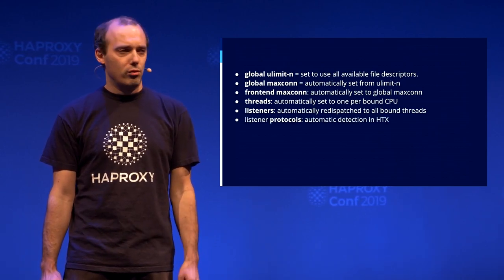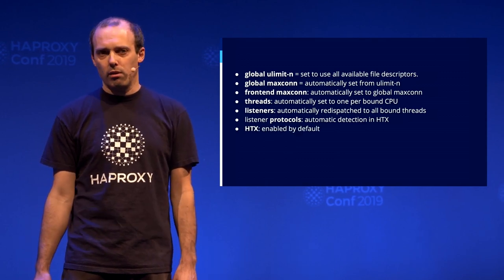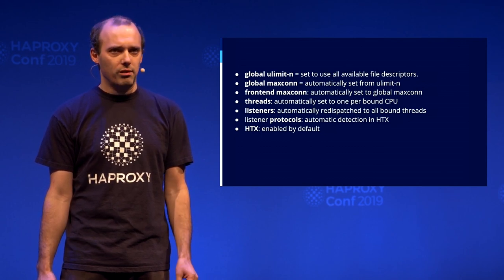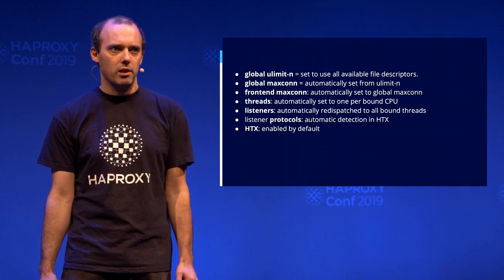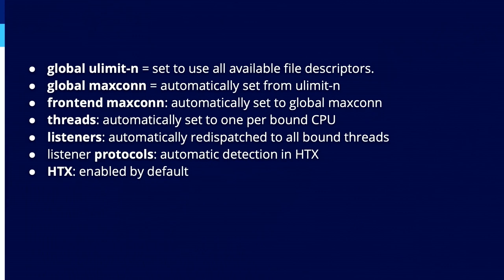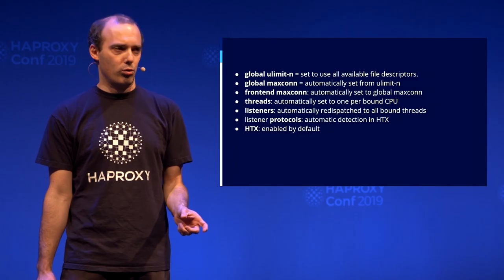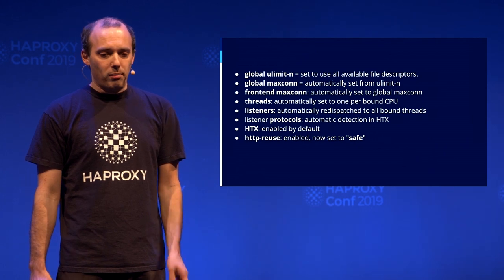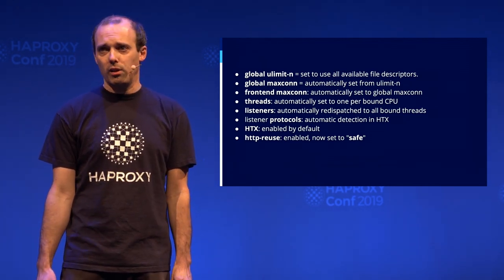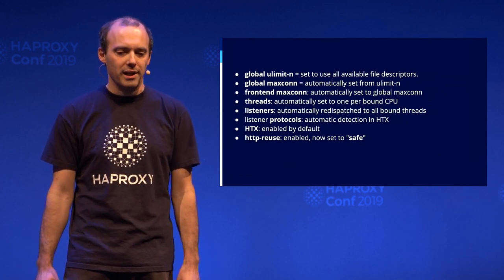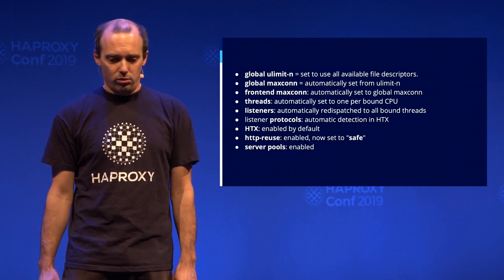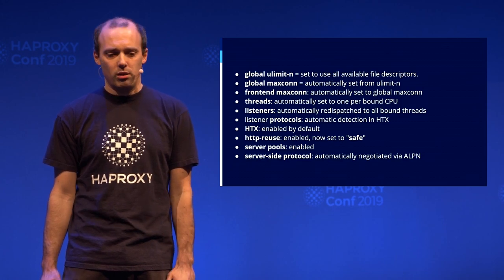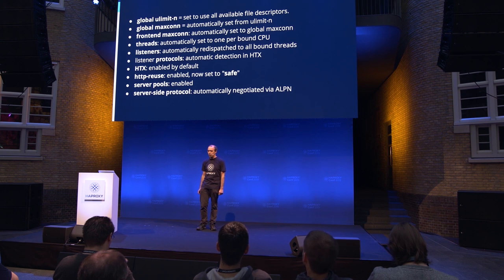The frontend Maxconn is derived from the global Maxconn. The number of threads is set to the number of threads available to the process. Listeners automatically redispatch incoming connections to the least loaded threads. Protocols are automatically detected if you are using HTX. HTX is enabled by default — it's a new internal structured representation of HTTP that allows multiple versions to coexist: HTTP/1, HTTP/2, or even FastCGI. The benefit is that modifying headers only requires changing one entry in a struct instead of moving bytes around. We also enable HTTP reuse by default in safe mode, and enabled connection pooling to servers. Server-side protocol is automatically detected and adjusted using ALPN.